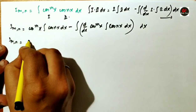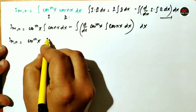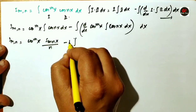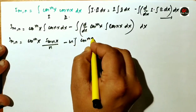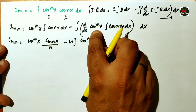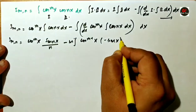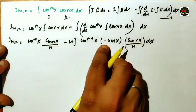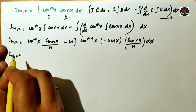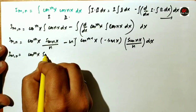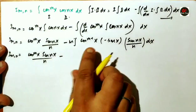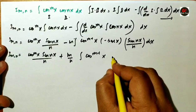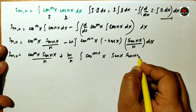This becomes I_mn equal to: cos^m(x) times integral of cos(nx), which is sin(nx)/n, minus the integral — since m is constant — of m·cos^(m-1)(x), and by the chain rule on cos(x) we get minus sin(x), times sin(nx)/n. Closing the bracket, the two negatives become positive. Therefore, I_mn = cos^m(x)·sin(nx)/n + m/n · integral of cos^(m-1)(x)·sin(x)·sin(nx) dx.